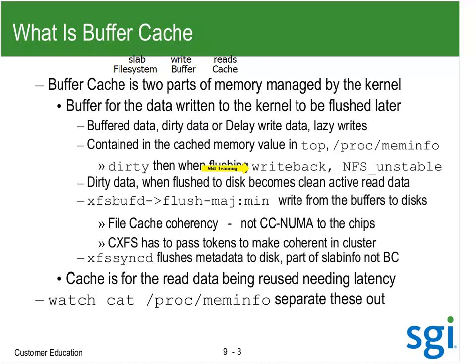Writeback data is data that has been flagged to flush - it's been marked to flush. Then we have NFS unstable for data that was writing to an NFS server. So if I'm writing to an NFS server, it's going to go from user space to dirty, then to writeback, then to NFS unstable.